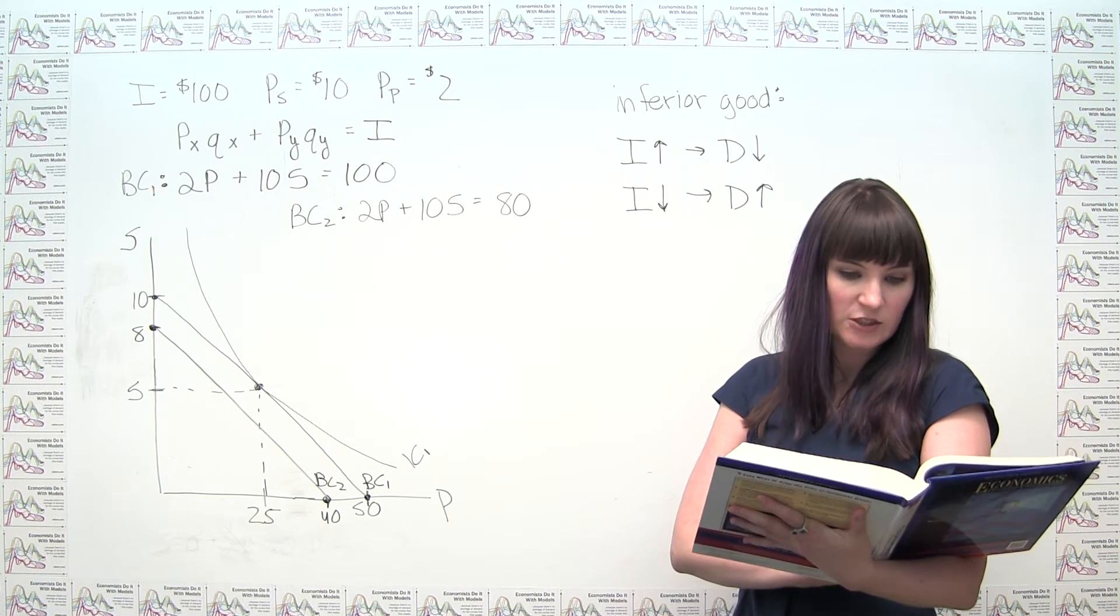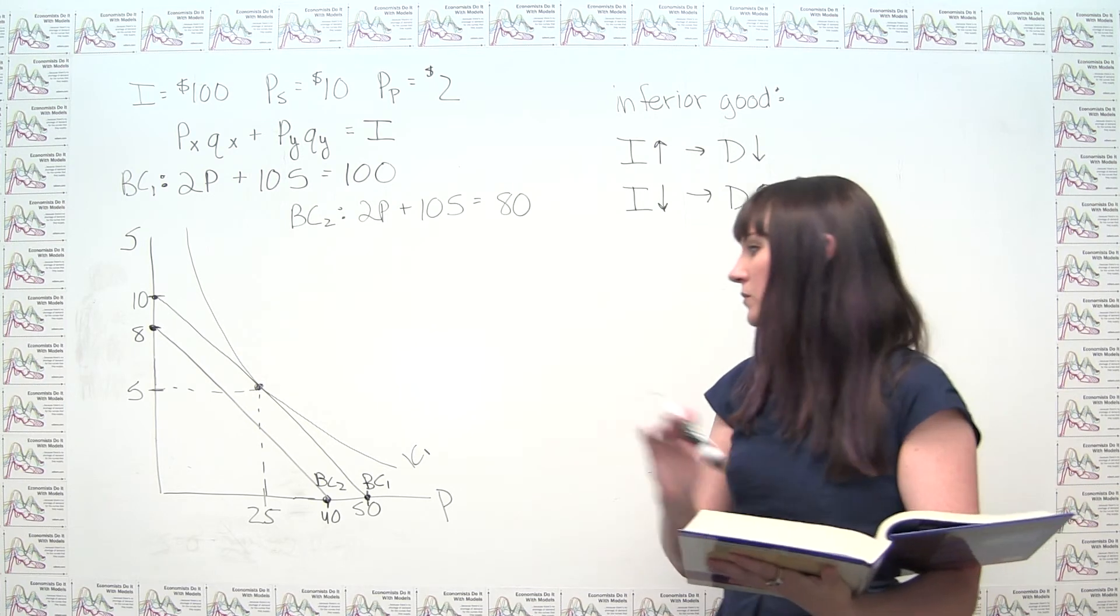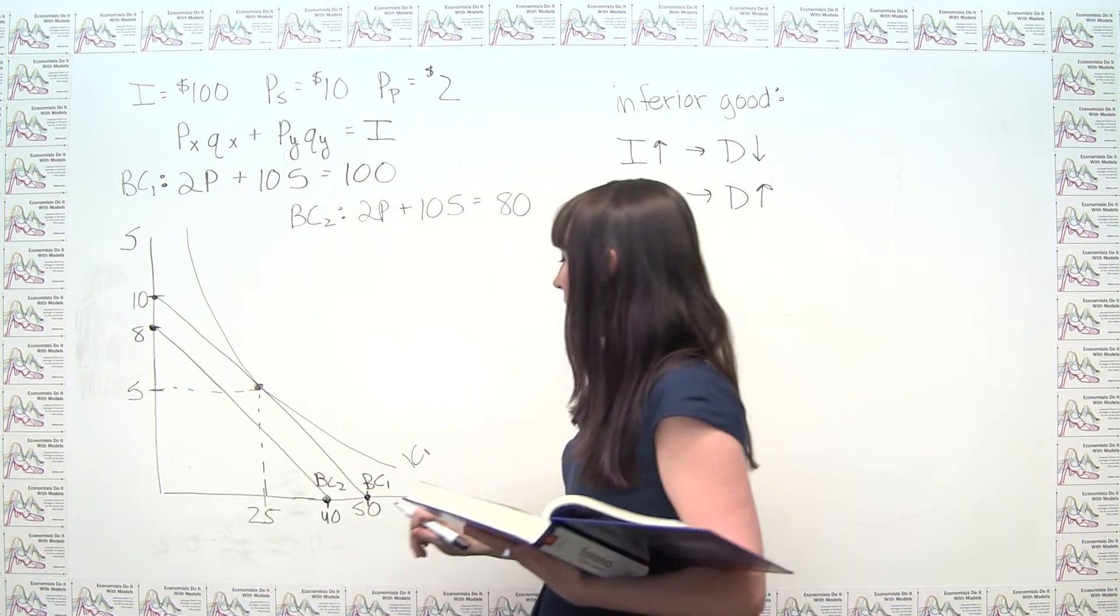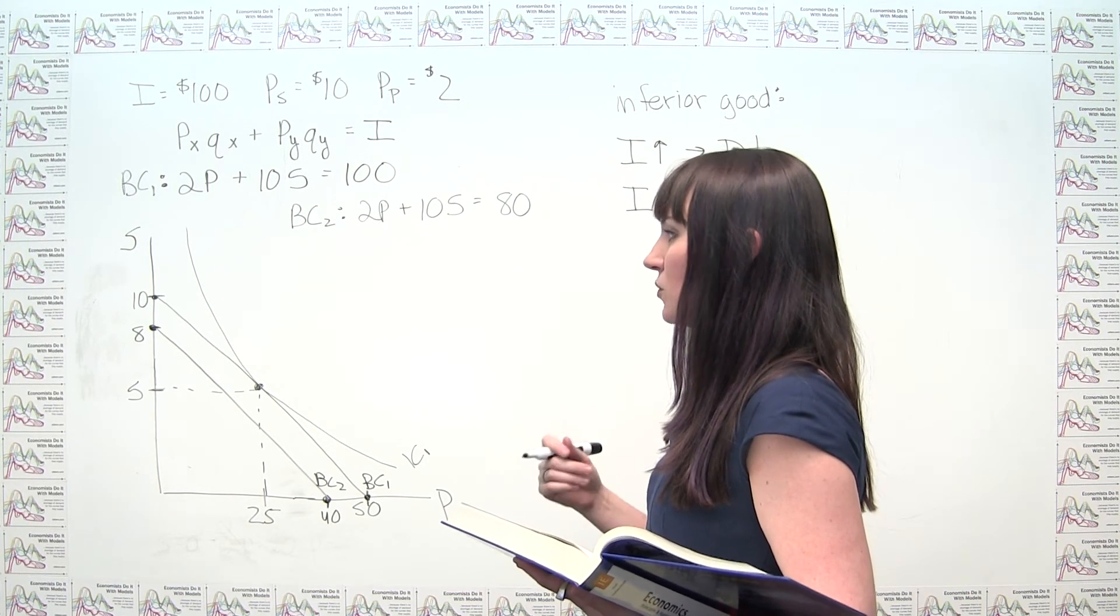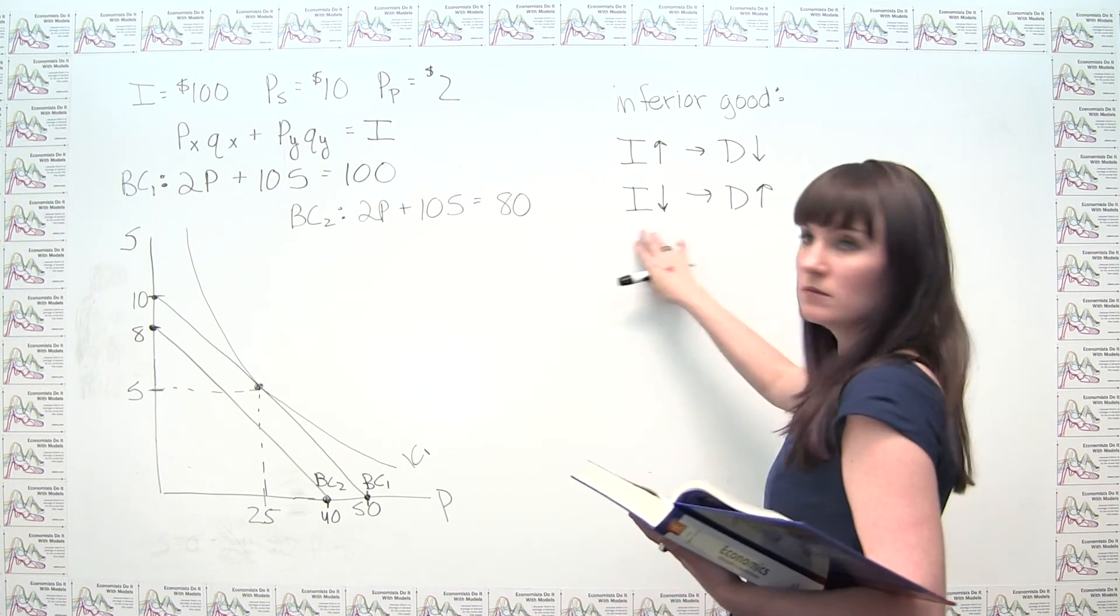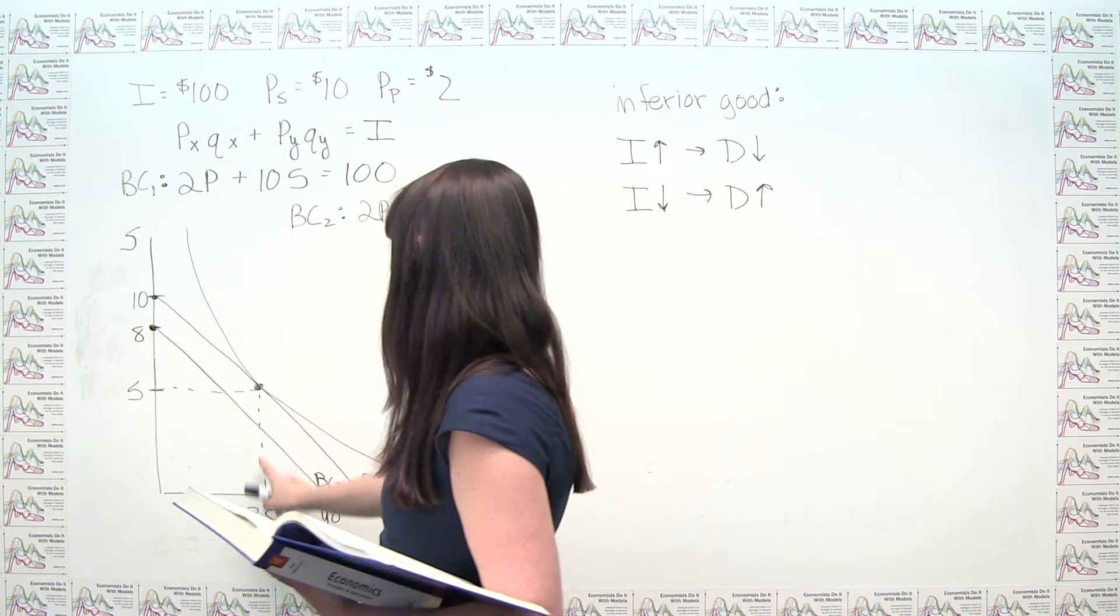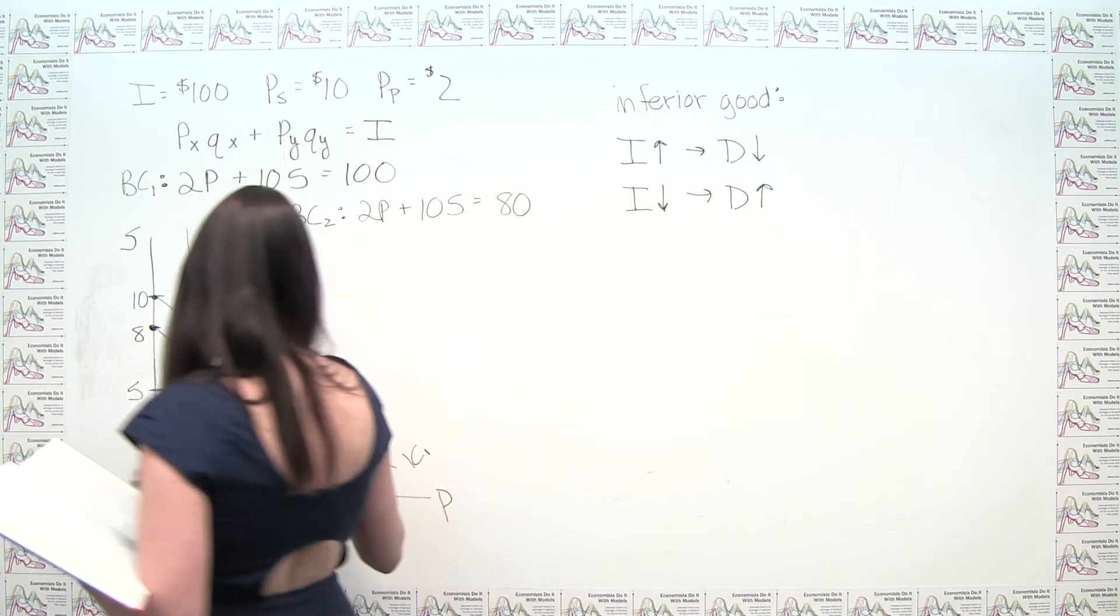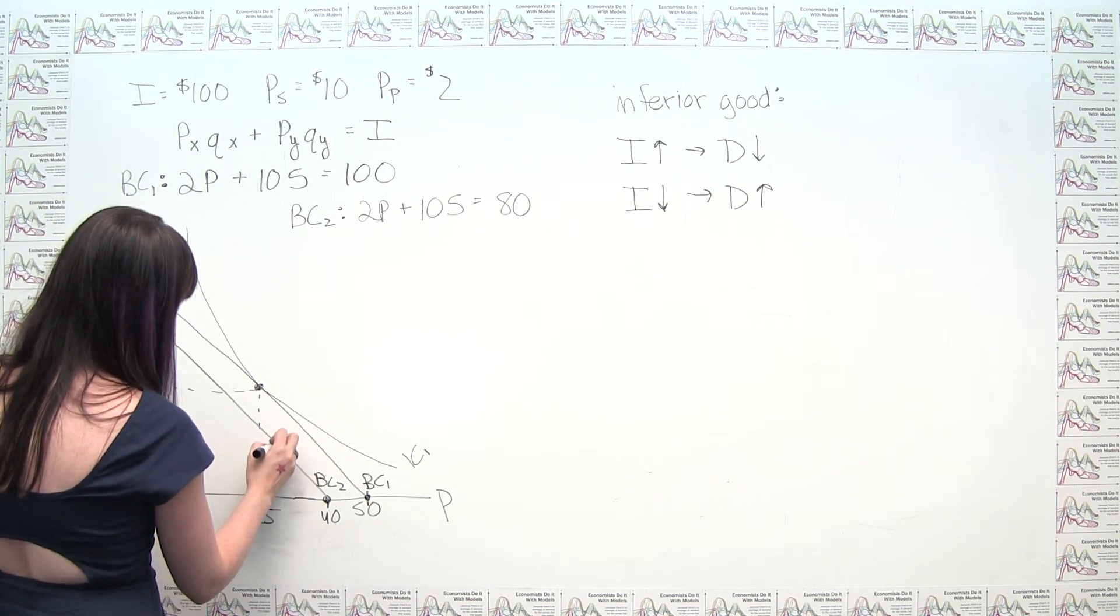It says, draw a new indifference curve tangent to his new budget constraint that reflects this inferiority. So we have to draw an indifference curve that's tangent to this new budget constraint where, because of this income decrease, he's actually consuming more potatoes than he was before. So we say it has to be tangent at some point to the right of this dashed line at this 25. So we can think about how to make that happen. And it's generally helpful to sort of start at the point of tangency and work from there. So let's say we make the point of tangency here.